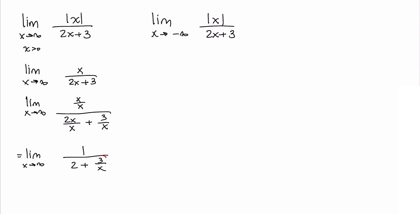As x approaches infinity, this term goes to zero, and this limit is one-half. So one of the horizontal asymptotes is y equals one-half.